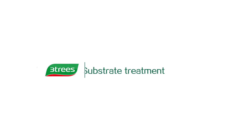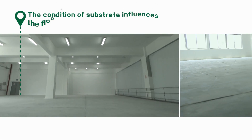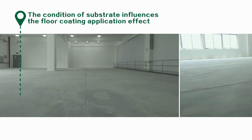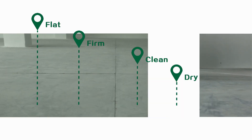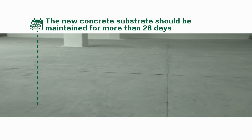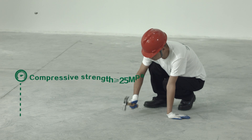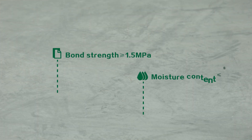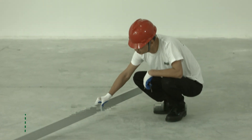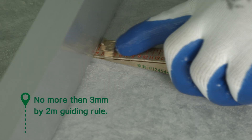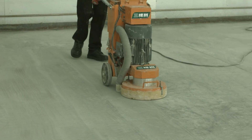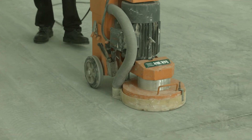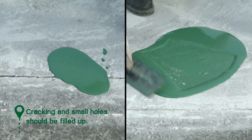Substrate Treatment. The condition of substrate influences floor coating application and final effect. Please pay enough attention. Substrate should be flat, firm, clean and dry. The new concrete substrate should be maintained for more than 28 days. The compressive strength, bond strength and moisture content need to reach standard. Substrate flatness should be no more than 3mm by 2m guiding rule. Sanding or abrasive blasting the substrate is necessary for removal of existing coatings to obtain a surface with proper roughness. Much parts should be sanded off. Cracking and small holes can be filled up with epoxy mortar.